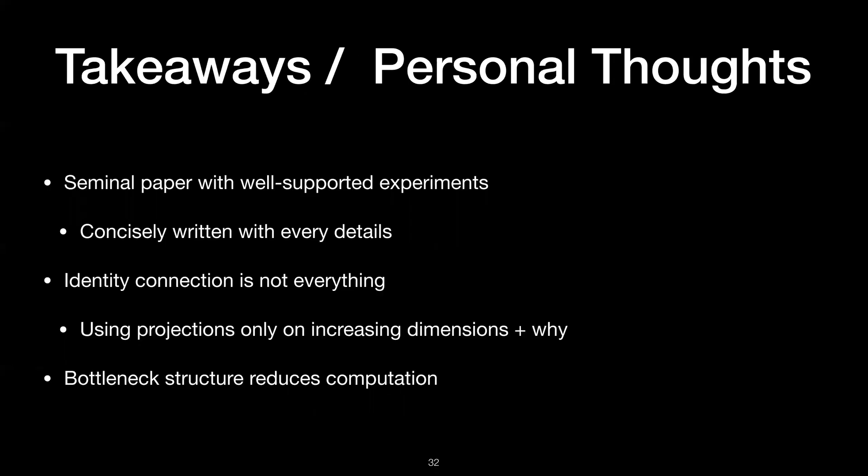Finally, for takeaways and personal thoughts, I believe that ResNet paper is a seminal paper with well-supported experiments, very concisely written with every detail. Also, I think identity connection is not everything. There are more details on ResNet paper that is worth knowing, for example, about using projections only on increasing dimensions. Since they did a bunch of experiments to show that using projections only on increasing dimensions is enough, it's worth knowing that part. Also, they use bottleneck structures to reduce computation on deeper networks, which is useful to know because just naively constructing more layers with connecting every input and output dimension is very computationally expensive. Thank you for listening.